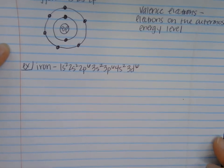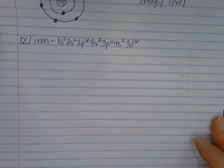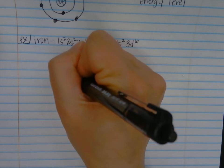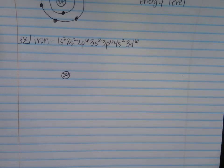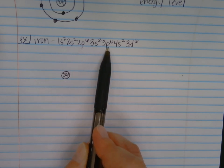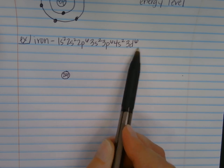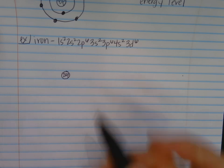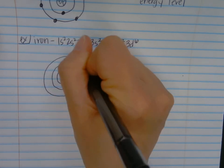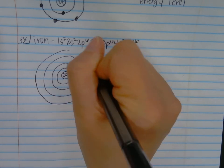Now that I've got my electron configuration, I'm going to start drawing my Bohr model by putting the protons in the center. Iron has an atomic number of 26, which means it has 26 protons. So in the center I'm going to draw a small circle representing my nucleus — 26 protons. Now, how many rings to draw? That depends on how many energy levels there are. Looking at the electron configuration, I have energy levels 1, 2, 3 — including that 3d6 — and then 4. So I'm going to draw 4 rings.